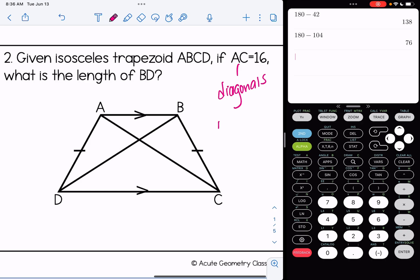So AC and BD are going to be congruent to one another. So therefore, BD is 16. And I don't really have any work to do to show that.